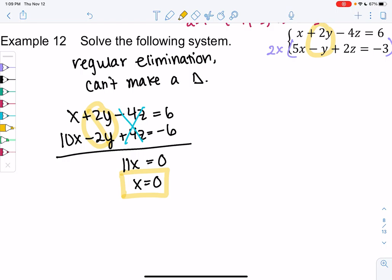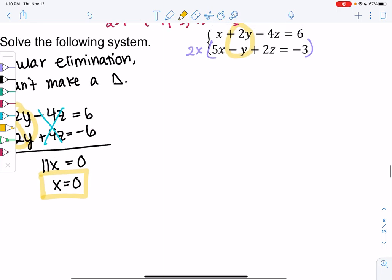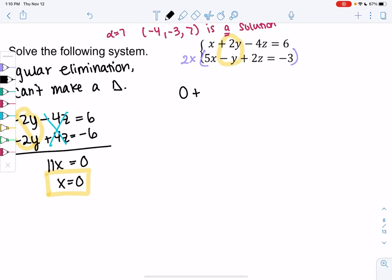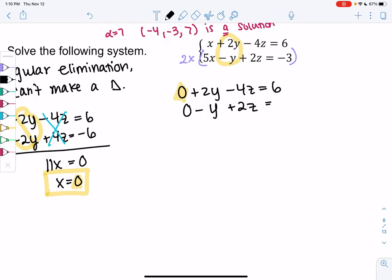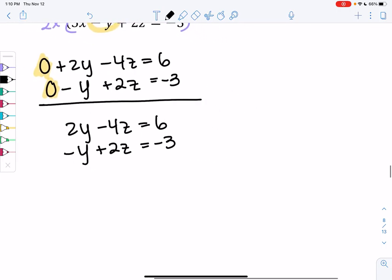We found one solution. Let's plug in zero for x and see if we can find y and z. We get zero plus 2y minus 4z equals 6, because we know x is zero. Then we get zero minus y plus 2z equals negative 3. So 2y minus 4z equals 6, and minus y plus 2z equals negative 3. Let's do more elimination with two variables. A little easier to solve because we only have two variables now. x is zero, we already know that.